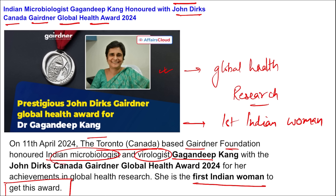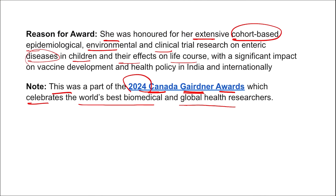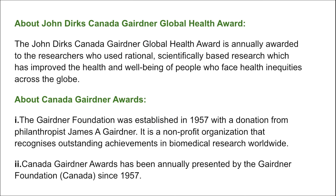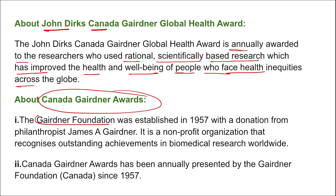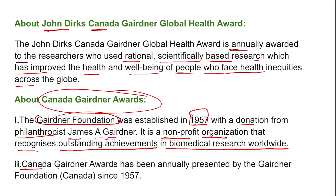John Dirks Canada Gairdner Global Health Award is annually awarded to researchers who use rational, scientifically based research that has improved the health and well-being of people facing health inequities across the globe. The Gairdner Foundation was established in 1957 with a donation from philanthropist James A. Gairdner. It is a non-profit organization that recognizes outstanding achievement in biomedical research worldwide. The Canada Gairdner Award has been annually presented by the Gairdner Foundation of Canada since 1957.